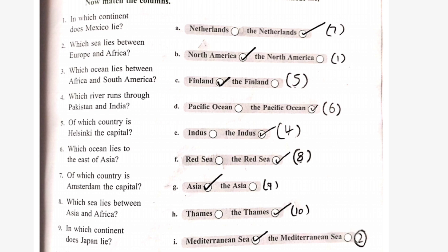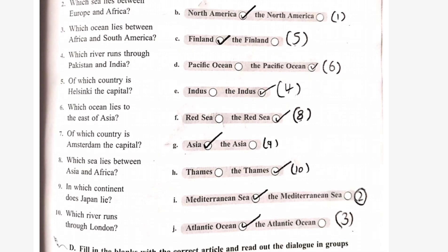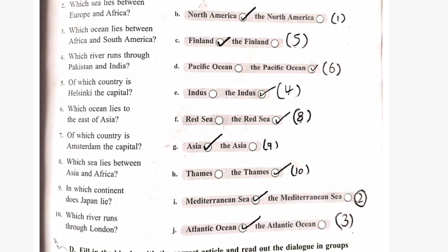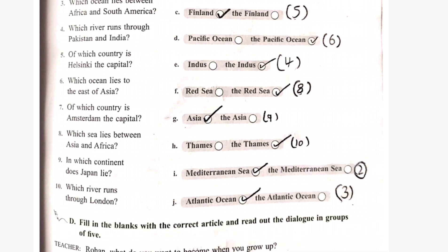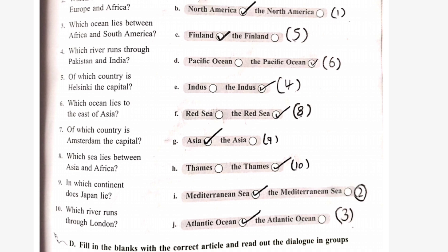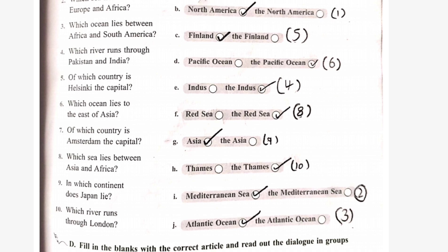Which sea lies between Europe and Africa? The answer is the Mediterranean Sea. Which ocean lies between Africa and South America? The answer is the Atlantic Ocean. Which river runs through Pakistan and India? The answer is the Indus. Of which country is Helsinki the capital? The answer is Finland. Which ocean lies to the east of Asia? The answer is the Pacific Ocean.